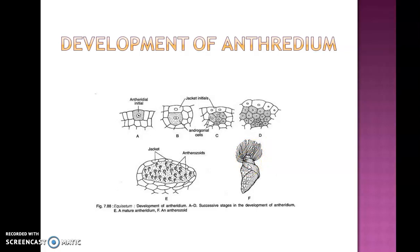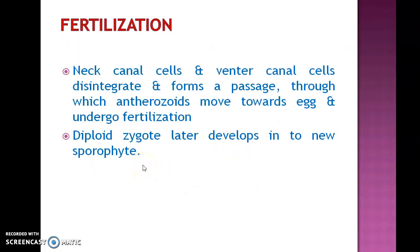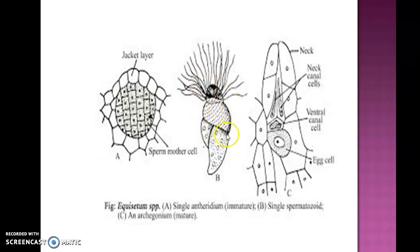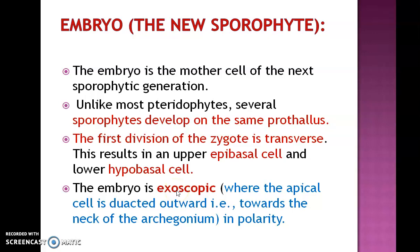The antherozoids are multiflagellate in Equisetum. After maturity, antherozoids get released from the antheridium, move towards the archegonium, enter through the neck, and reach the egg, fusing together to form the zygote. The zygote forms the sporophytic generation. The embryo is formed from the zygote. The first division of the zygote is transverse, forming an upper epibasal cell and a lower hypobasal cell. The development of the embryo is exoscopic — the epibasal cell is directed outwards toward the neck of the archegonium.